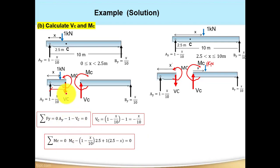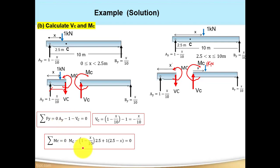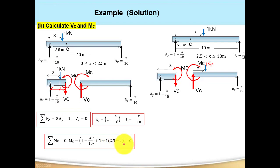Now for Mc, taking moments about point C: summation of moments about C = 0. Ay acts at distance 2.5 from C, so Ay × 2.5 = (1 − X/10) × 2.5, which is clockwise — negative. Therefore: −(1 − X/10) × 2.5 + 1 × (2.5 − X) = 0. The perpendicular distance for the unit load from C is (2.5 − X), and it produces a counterclockwise (positive) moment. Rearranging: Mc = 7.5X/10. These two equations are valid for 0 ≤ X < 2.5.